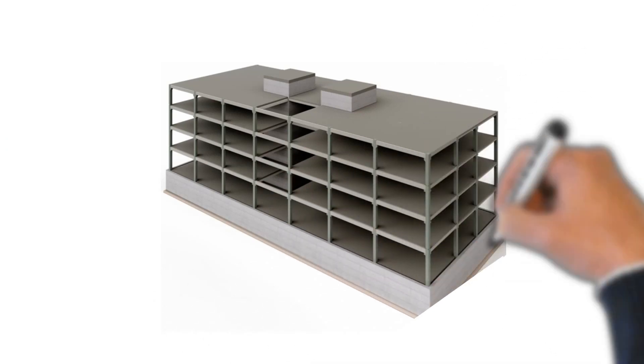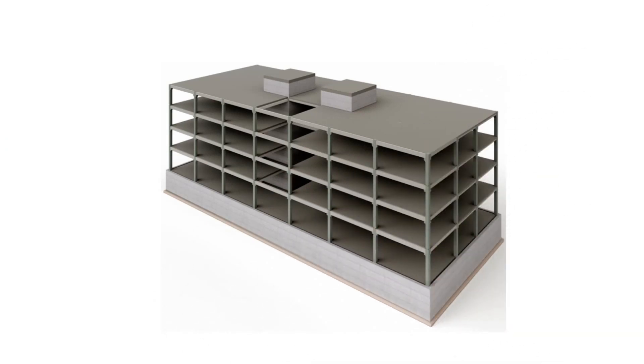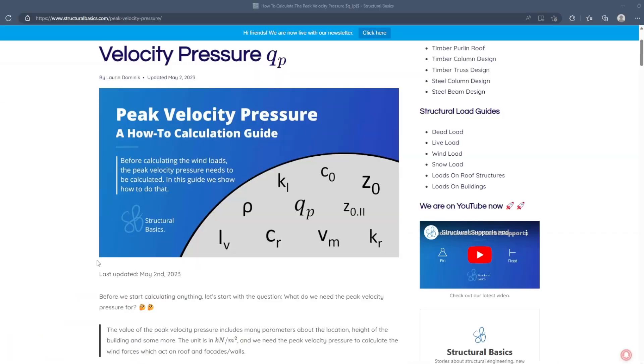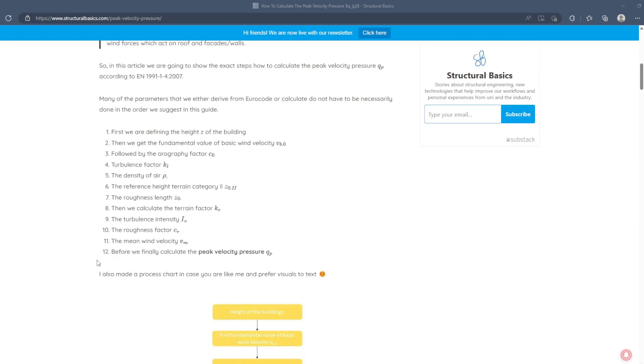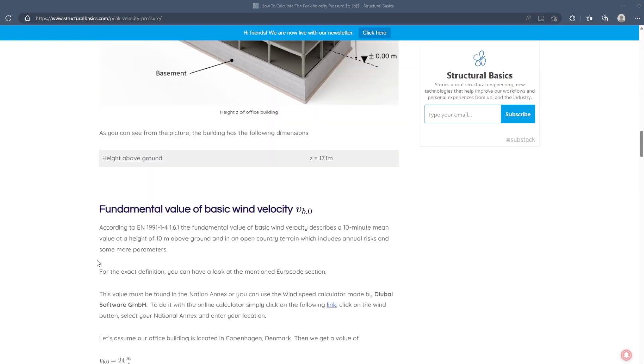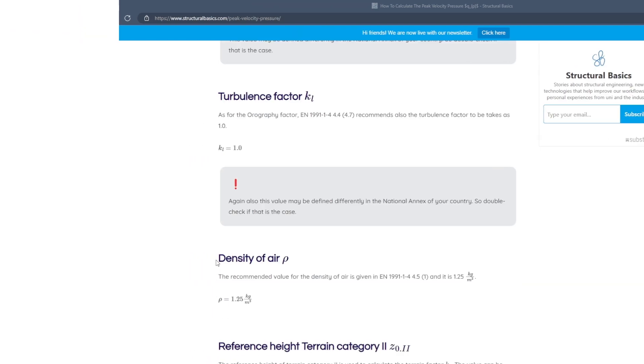To do that we use an example of an office building. So by the end of the video you know how to calculate the peak velocity pressure according to Eurocode and you're one step closer to calculating wind loads on walls and roofs. If you like written content more, then you can also check out our article on our homepage. We'll leave a link in the description below. Alright, let's get started.